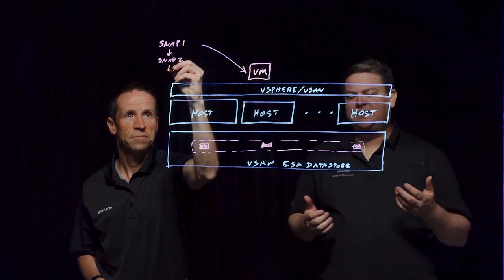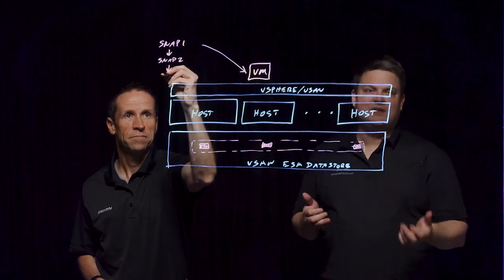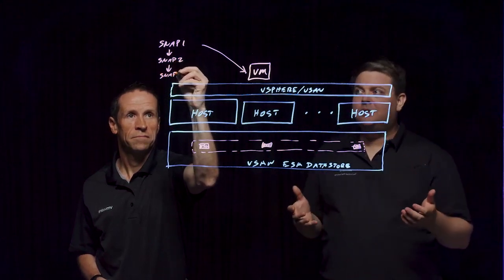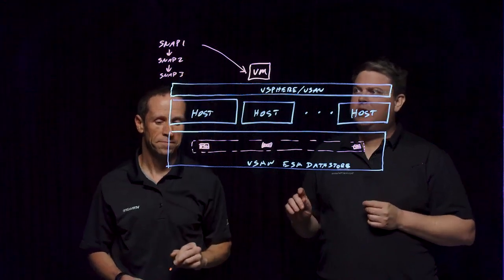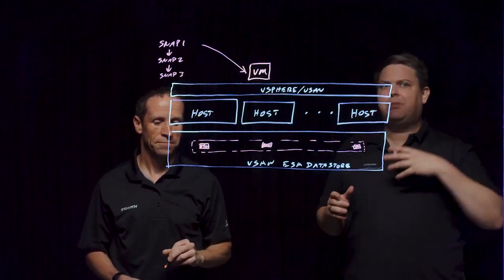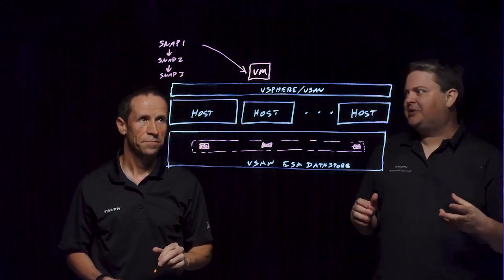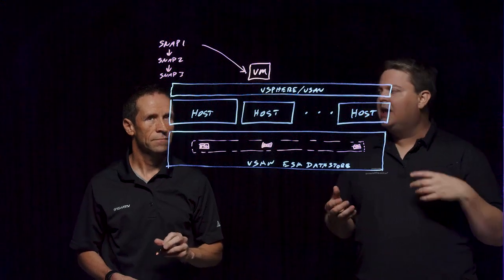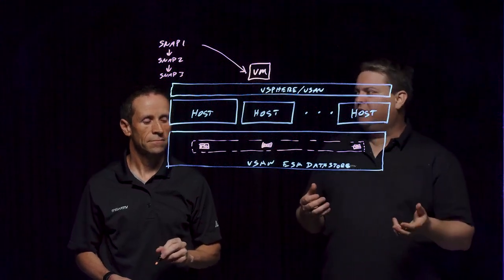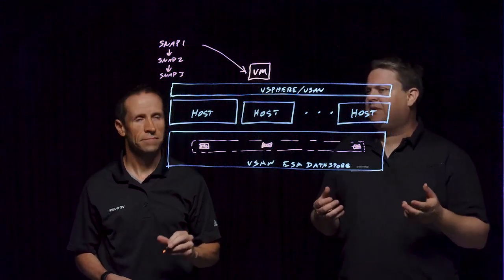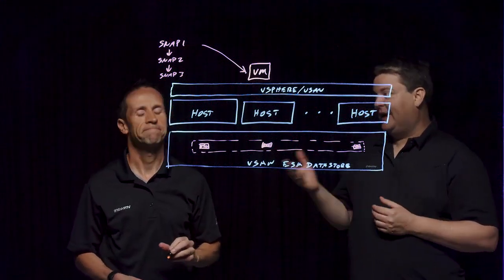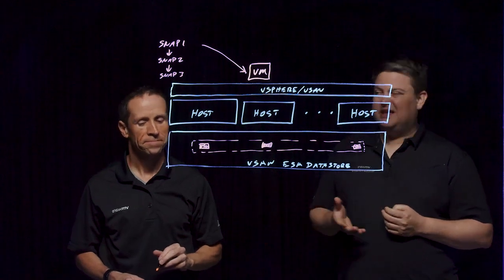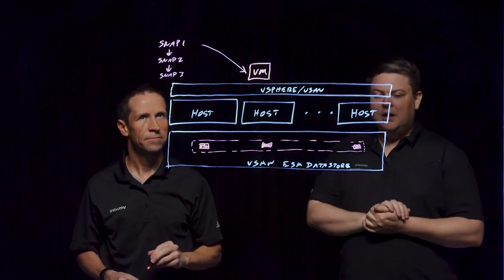If you read the KBs, they'd often tell you don't keep snapshots around for more than a day or two. And if you needed a high performance snapshot as part of some type of copy data management workflow and you were wanting low stun times, often people would look at offloading to array snapshots and using things like SRA with SRM for that.